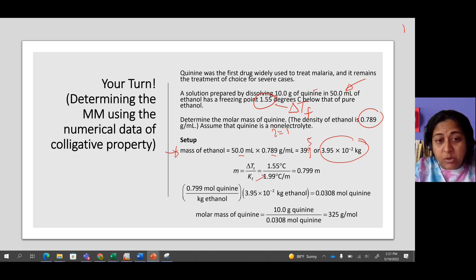Yes, we will always be given that number. It is 1.99. So we divide the freezing point change by the Kf, and we find the molality.